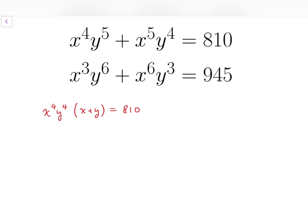For the second equation, after factorizing I will get x cubed times y cubed times x cubed plus y cubed equals 945. But after looking at the sum of two cubes, I can get x cubed times y cubed times x plus y times x squared minus xy plus y squared equals 945.